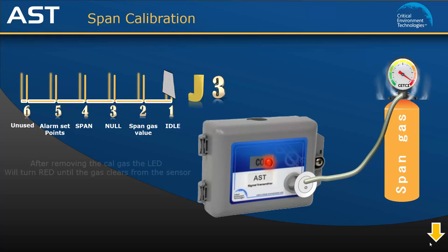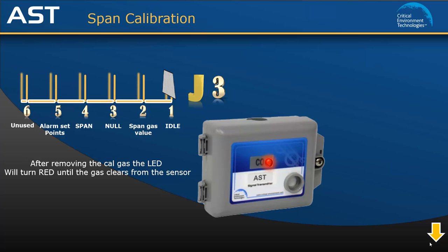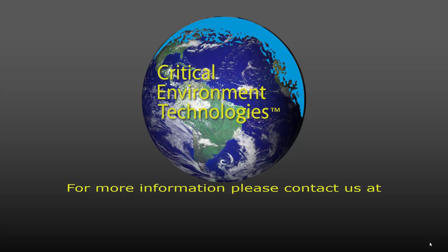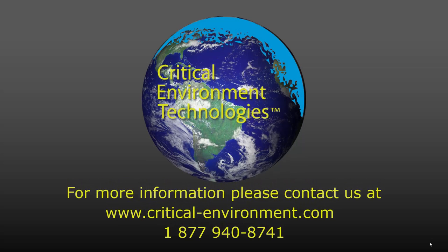The LED light will turn red because the sensor is sensing residual gas. As the gas dissipates, the LED will turn amber and then green. This completes the calibration procedure for the AST 2nd Generation Analog Transmitter. If you would like more information, please visit us at critical-environment.com or contact your authorized dealer, regional sales manager, or any other member of our team at 1-877-940-8741.